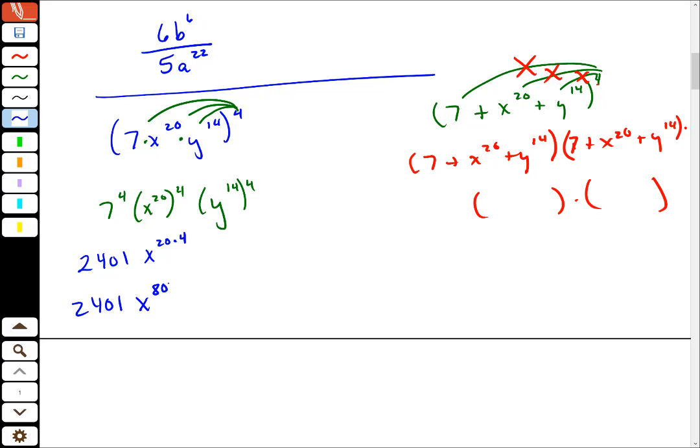So it's different. People routinely get this confused. This is different from x to the 20 times x to the 4th. This is x to the 24th. You add them. Here you add. Here, when you raise a power to another power, right, then you multiply.